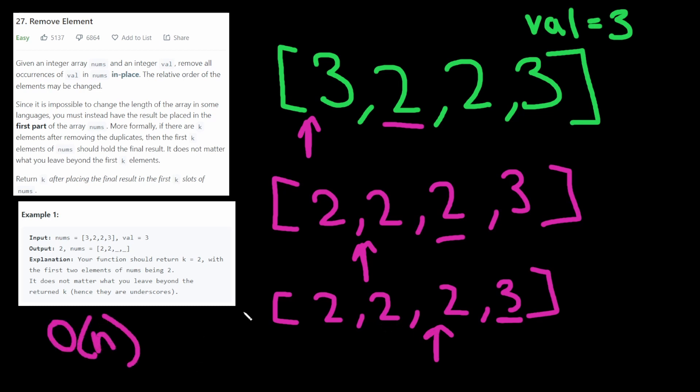And this is O(n) time complexity, because we're just going through each element once, and O(1) space complexity, because we're not allocating memory for any data structure.